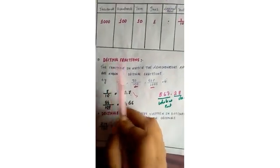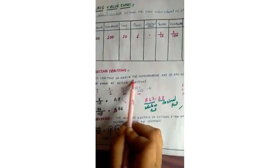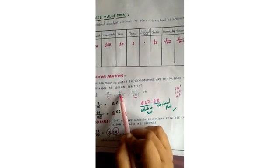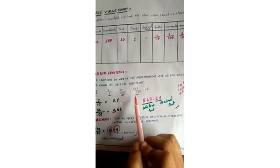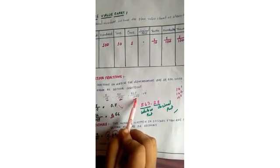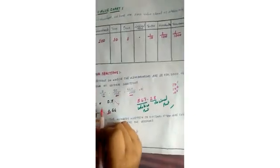Now let's look at decimal fractions. Fractions in which the denominators are 10, 100, 1000 are known as decimal fractions. For example: 7/10, 70/100, 567/1000 — these are called decimal fractions because the denominator is a power of 10: 10 to the power 1, 10 to the power 2, 10 to the power 3, and so on.